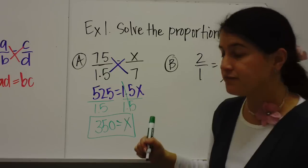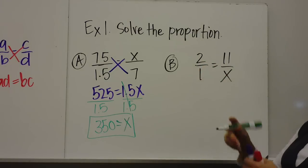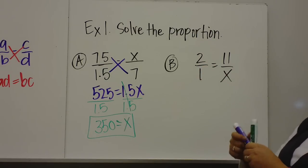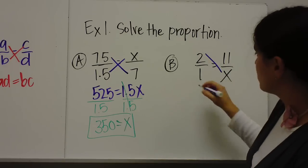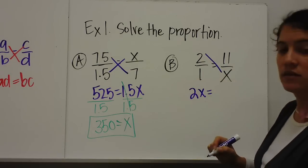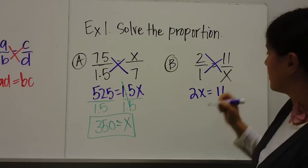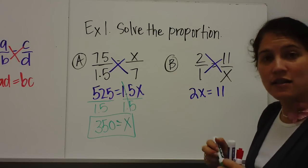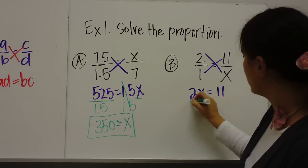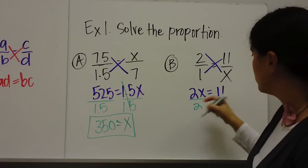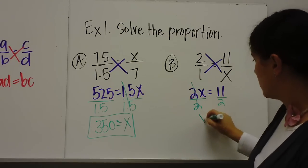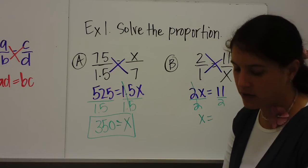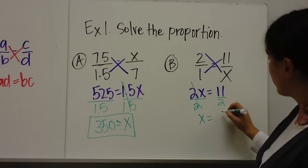Let's do another one. 2 over 1 is equal to 11 over X. I'm going to do the cross product. 2 times X is 2X. 1 times 11 is 11. Now I have to get X by itself. So I'm going to divide by 2. And 11 divided by 2, you can type in your calculator, is 5.5.